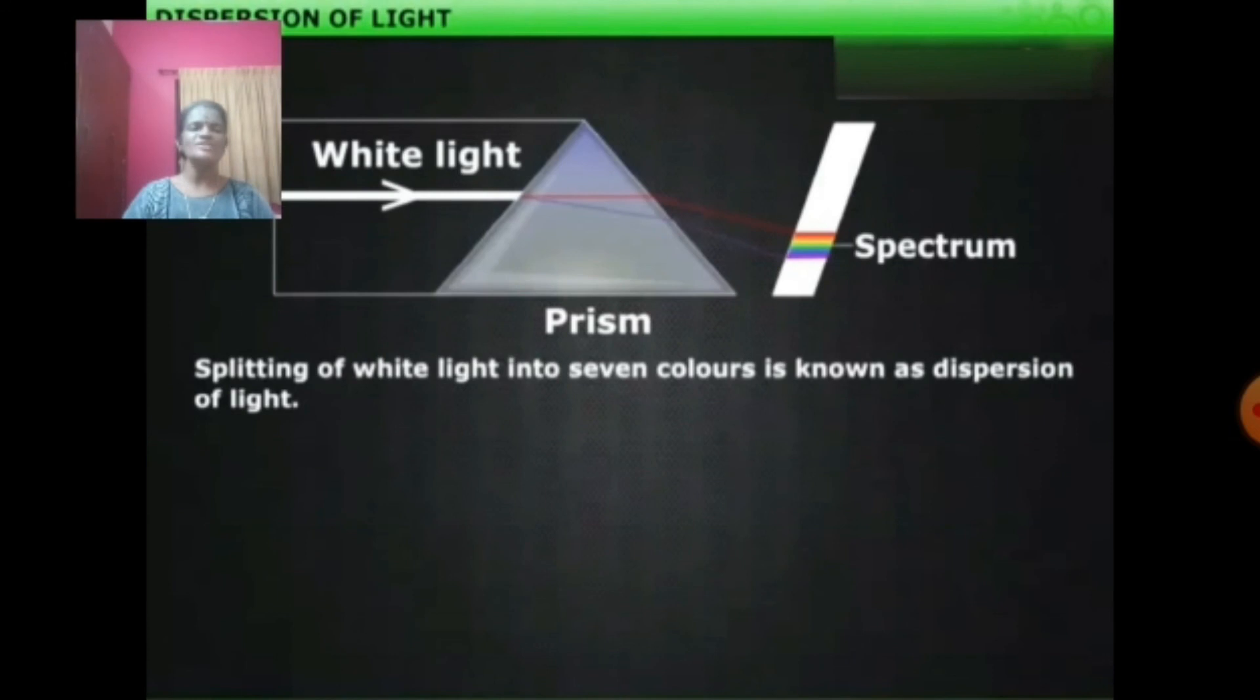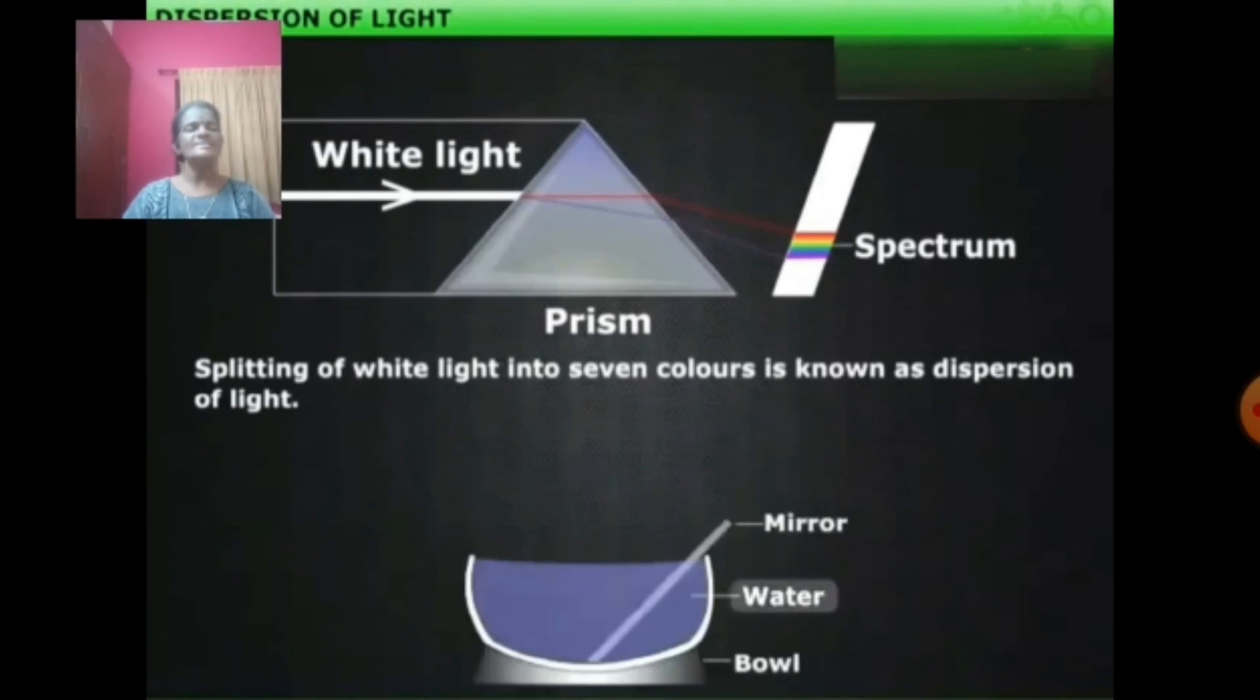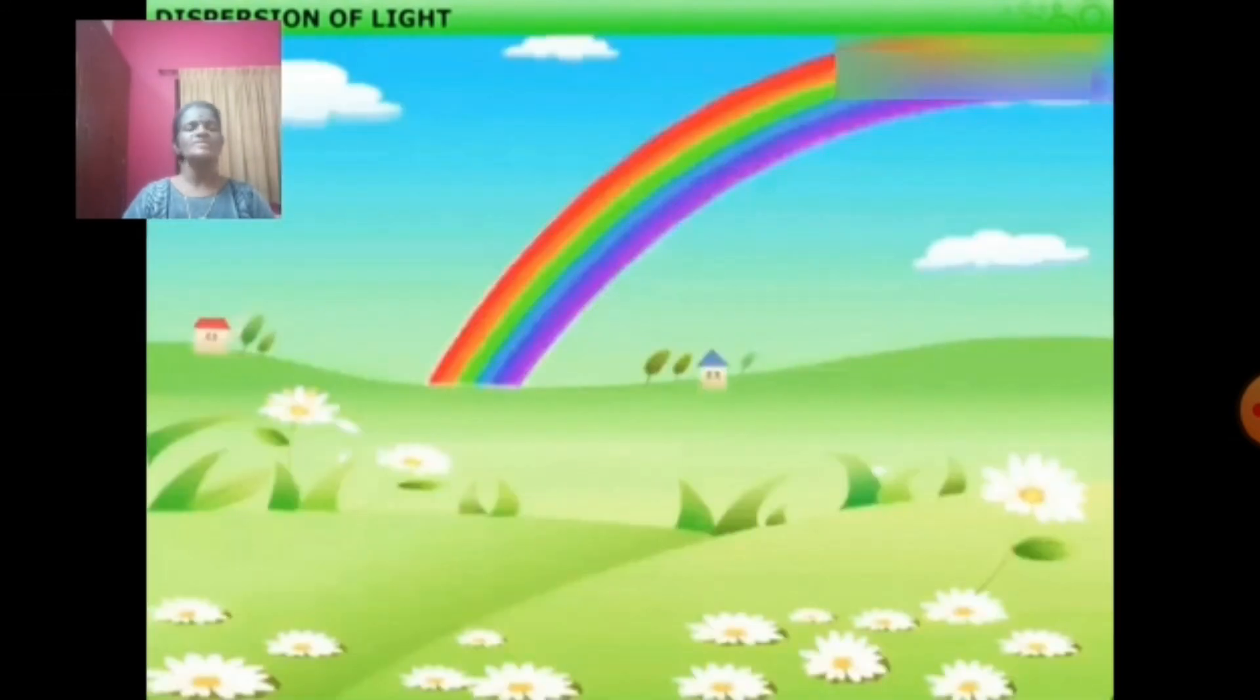Here, the combination of water as well as the mirror forms like a prism, so a spectrum is obtained on the white wall. Similarly, rainbow is a natural phenomenon showing the dispersion of light, a spectrum of light.